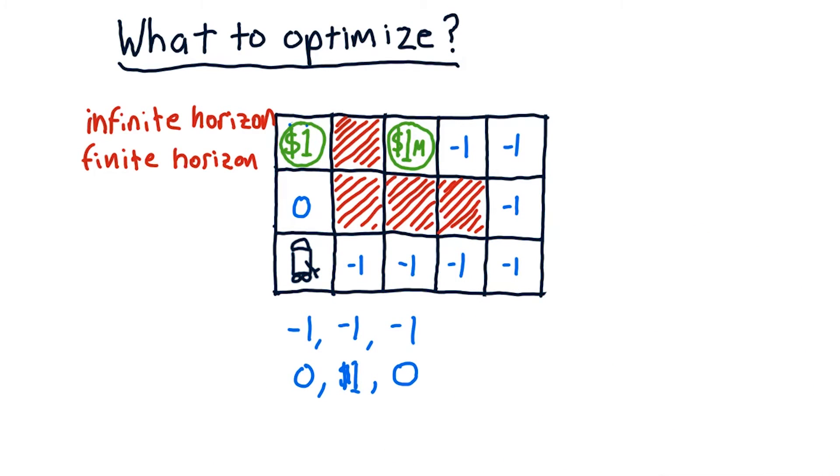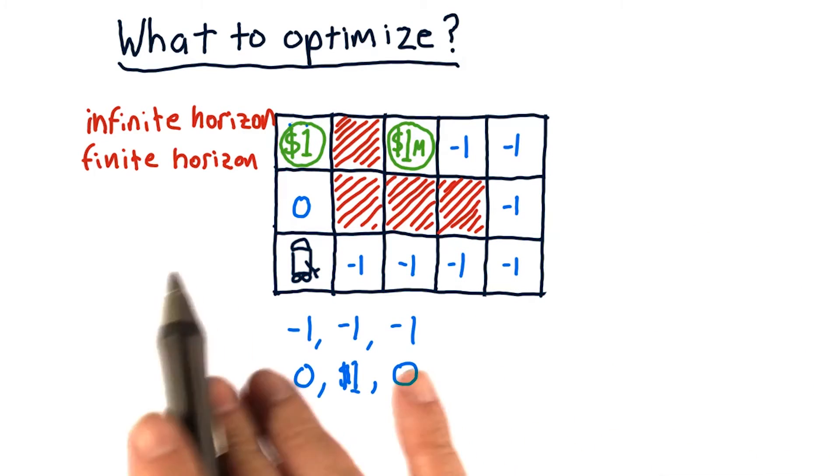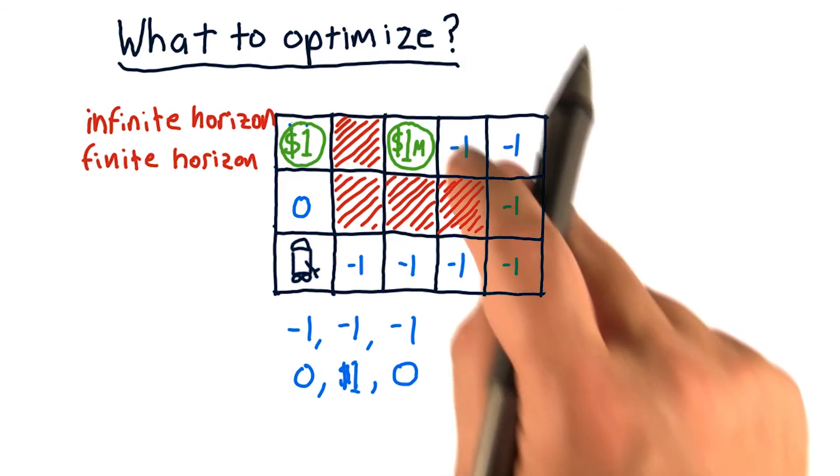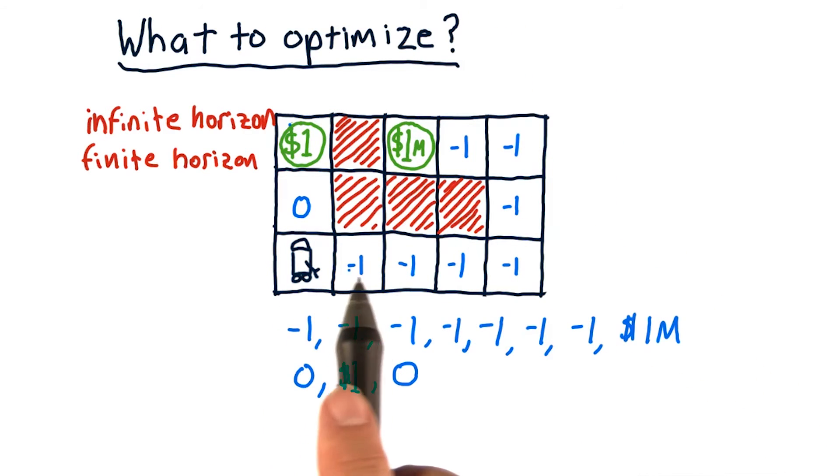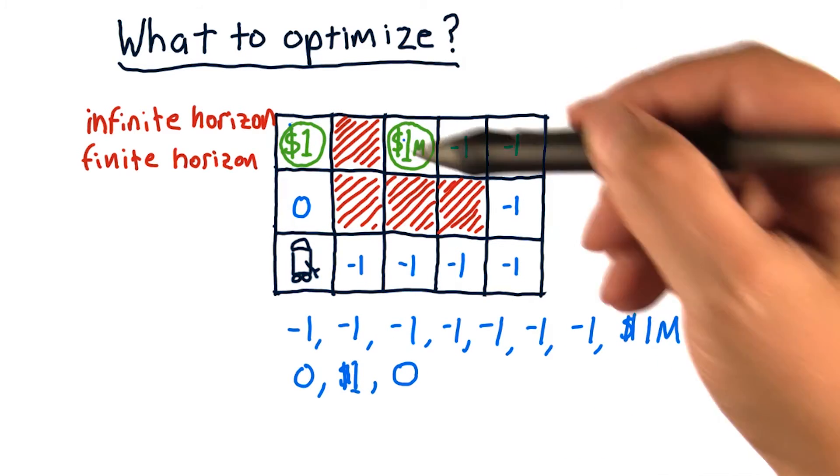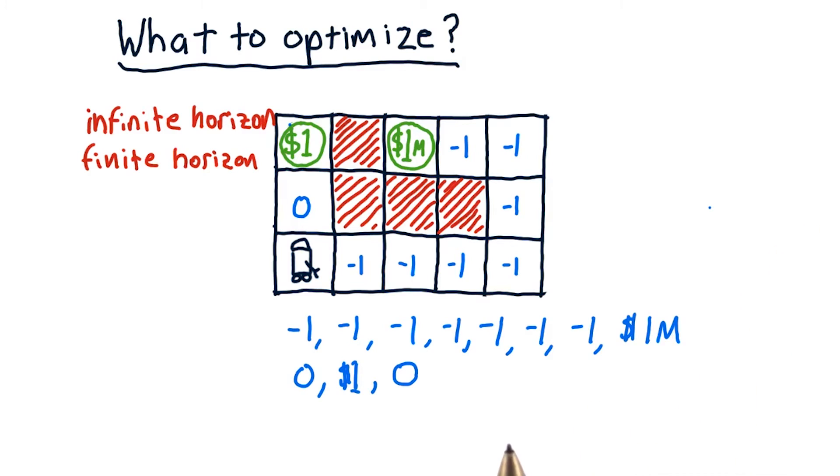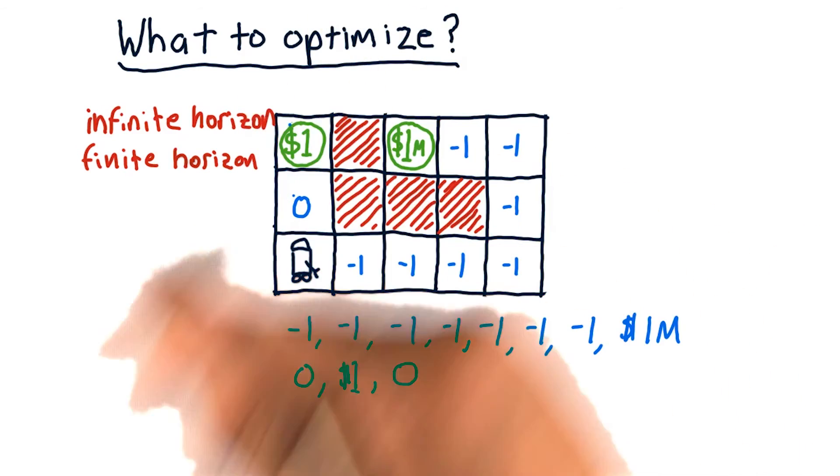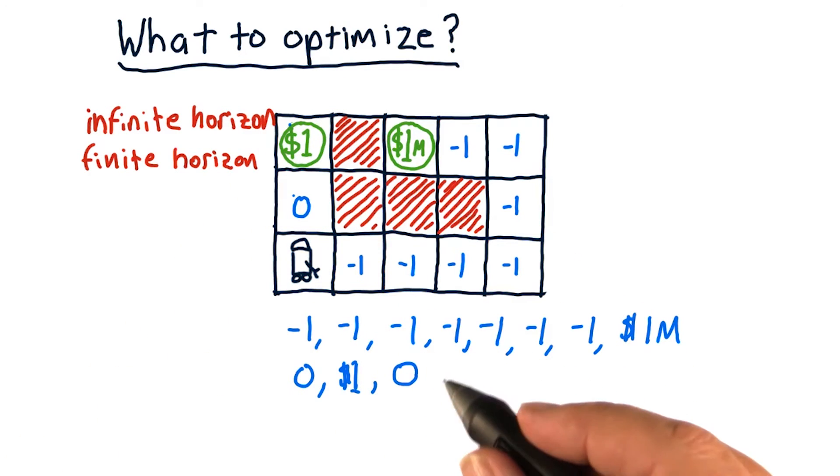Now if we extend the horizon a little bit further, say out to eight, we would find that this is the best thing to do. So if we go this way, we get negative one, negative one, negative one until we hit the jackpot here and get a million. Clearly, if you sum this up, it's a pretty good prize. If we go this way and touch that one dollar over and over again, we get this.